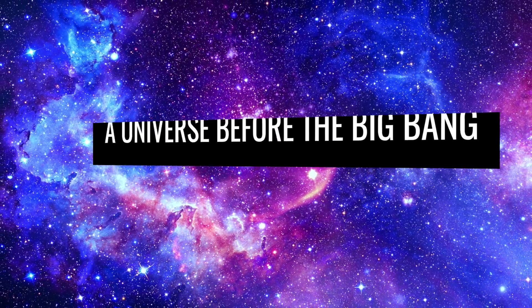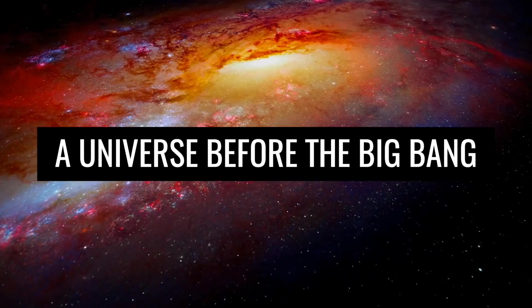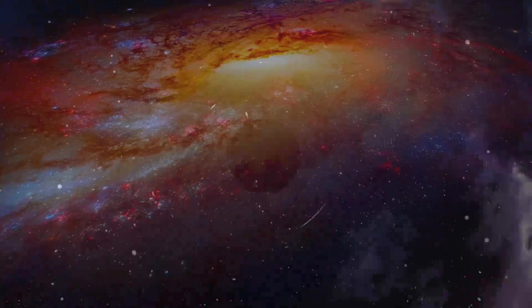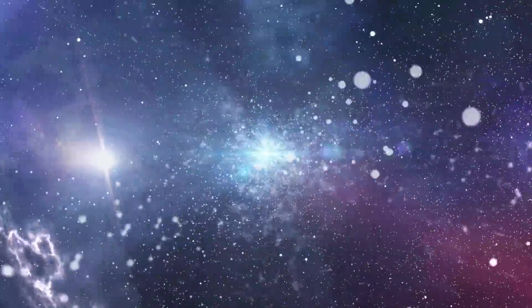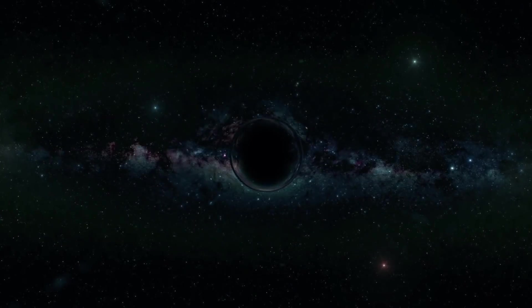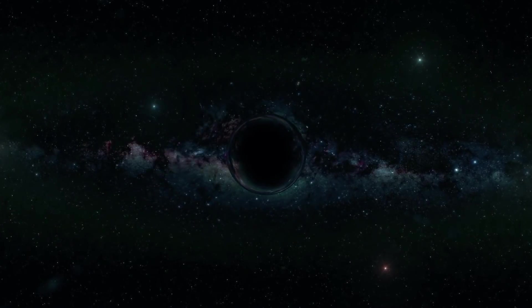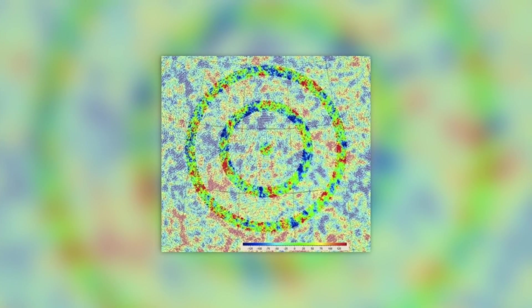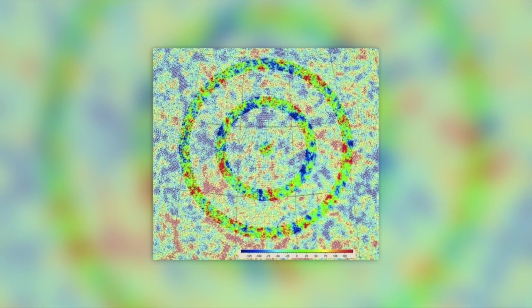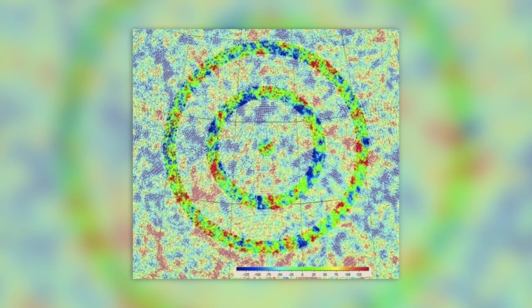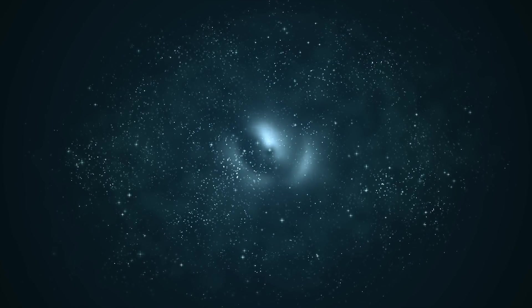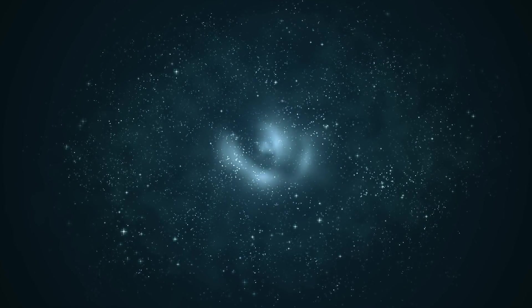A Universe Before the Big Bang. Incredible but true. Sir Roger Penrose stated that it was very likely that a complete universe existed before the Big Bang. The Briton drew proof for this from various black holes. Specifically, the scientist alludes to a multiplicity of mysterious electromagnetic formations in the Universe. These mysterious spots are called Hawking points in the expert world. The exact background of these galactic objects could not be explained for a long time.